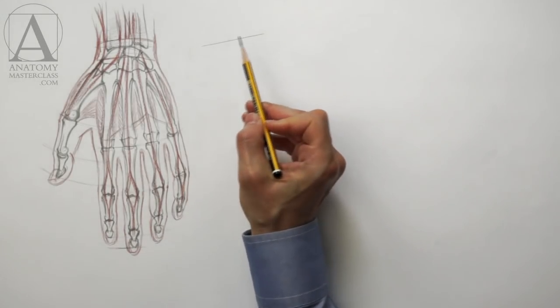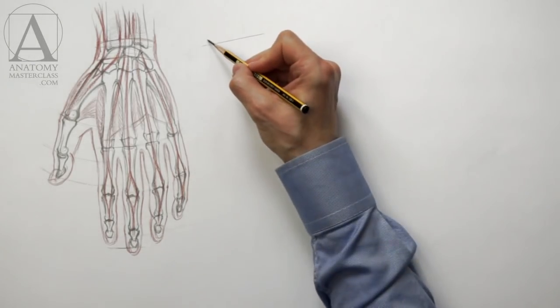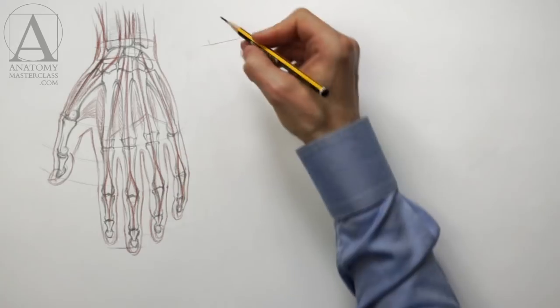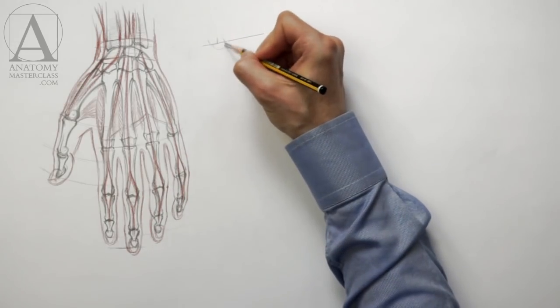I will make a drawing of the lower arm and hand in the pronation position. This position is when the palm of the hand is facing downward.